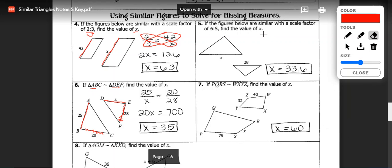Hopefully you used the scale factor of 6 fifths and set that equal to the proportional sides or corresponding sides of X and 28. It was big to small, so X should be on the top and 28 should be on the bottom.